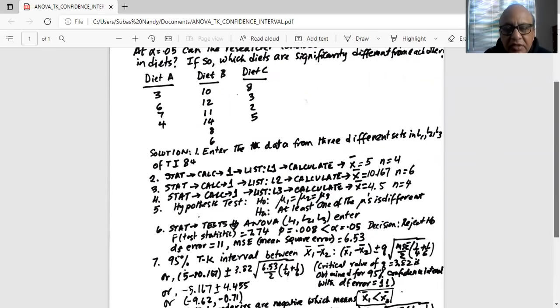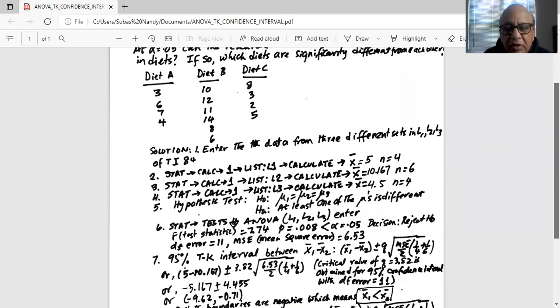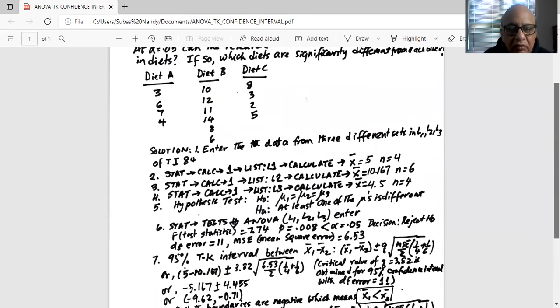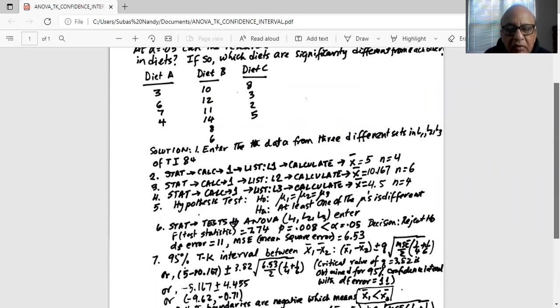The test statistic F is 7.74, p is 0.008, which is less than alpha equal to 0.05, decision reject H0. That means at alpha equal to 0.05, there's enough evidence to support the alternate which states that at least one of the mu's is different.